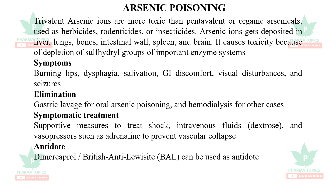Arsenic poisoning causes GI discomfort, nausea, vomiting, visual disturbance, and fits. Treatment includes hemodialysis, supportive measures — dextrose, vasopressors, adrenaline for BP. Antidote: Dimercaprol (British Anti-Lewisite), Dimercapto Succinic Acid, EDTA, and other chelating agents.